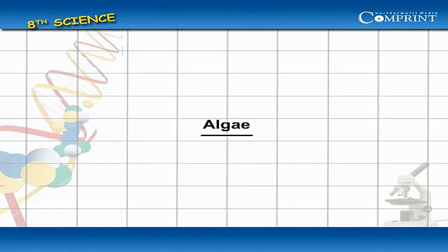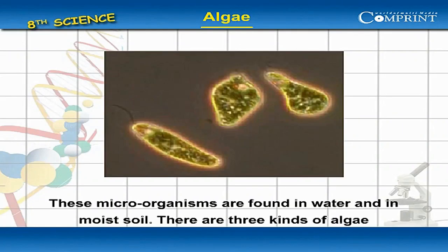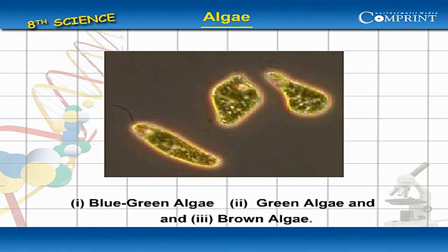Algae. These microorganisms are found in water and in moist soil. There are three kinds of algae: blue-green algae, green algae, and brown algae.